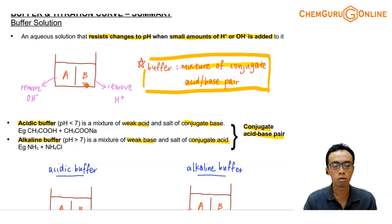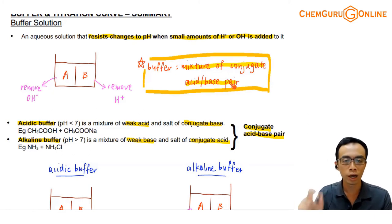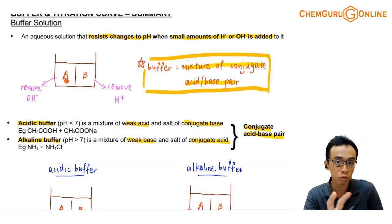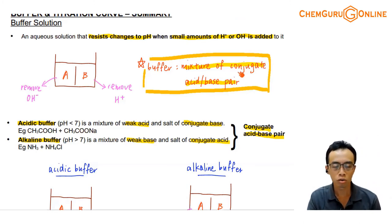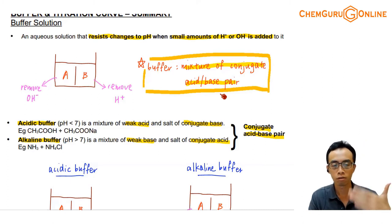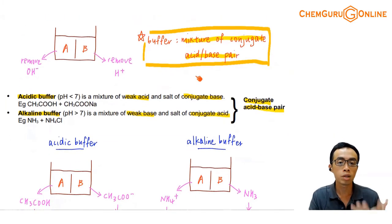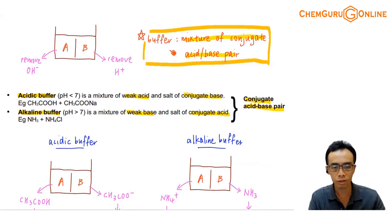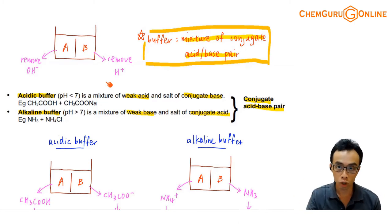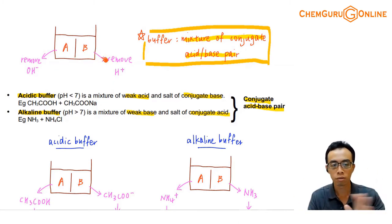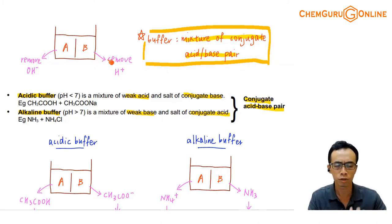So now we know that a buffer is nothing more than a mixture of a conjugate acid-base pair. It is still acid plus base, but this acid and base are related to each other — they are a conjugate acid-base pair. It's good to keep this in mind rather than just remembering the functional definition, which only tells me what it does but never tells me what is inside. A buffer is a mixture of a conjugate acid-base pair — acid plus base. The job of the acid is to remove OH-, the job of the base is to remove H+. Each one only needs to do one thing — very simple.